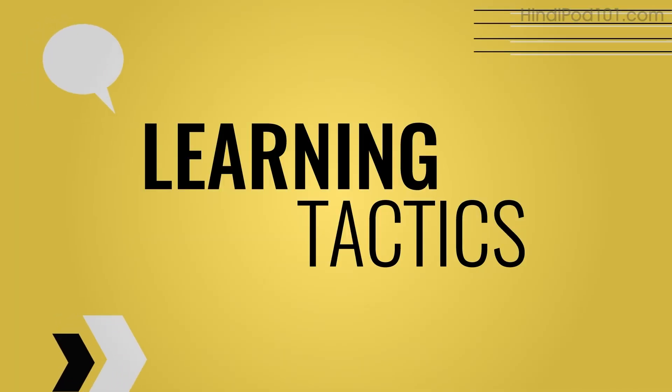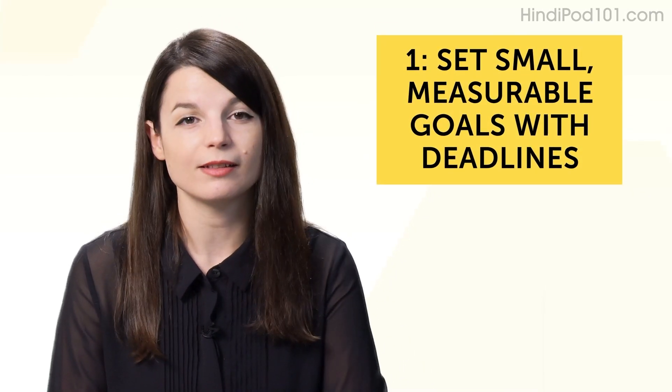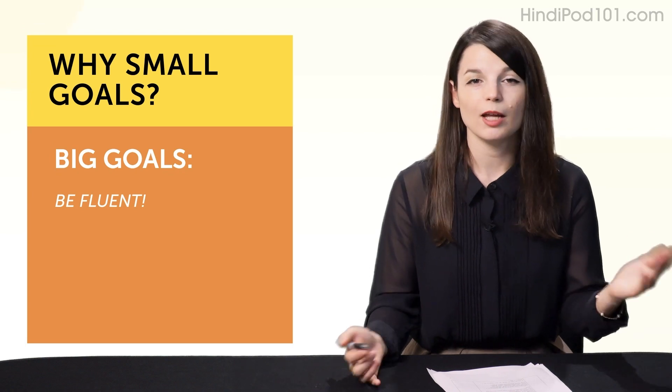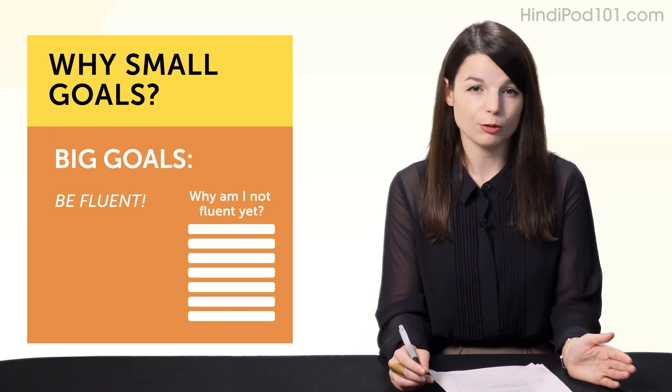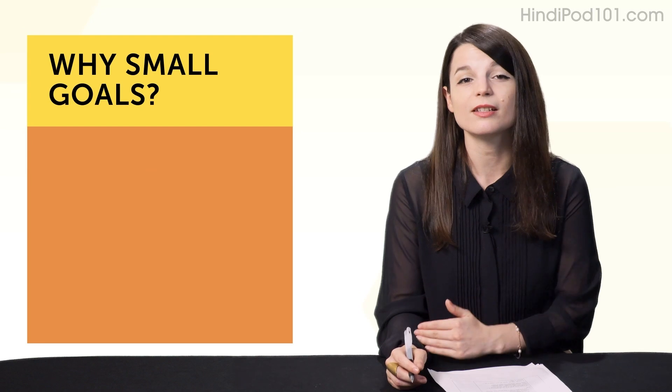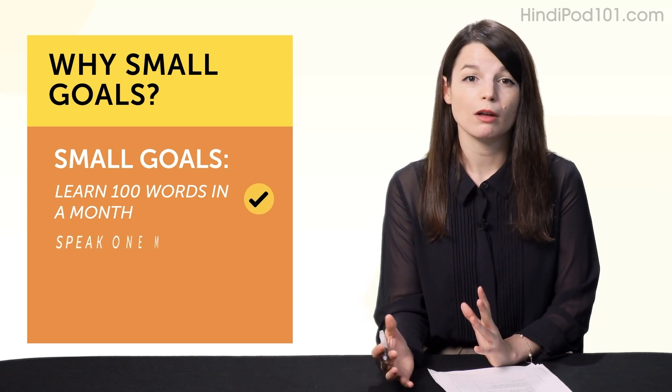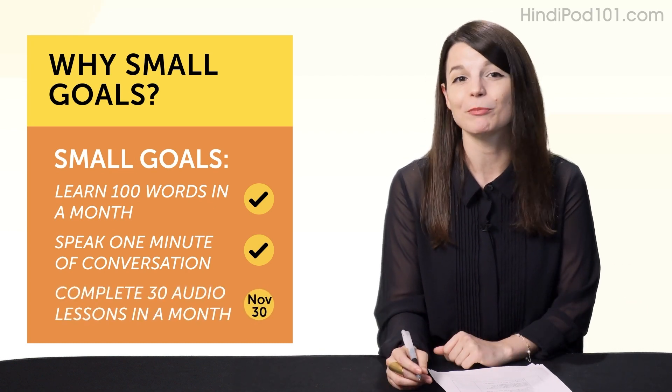Let's start with the first and most important one. Habit number one, set small, measurable goals with deadlines. Why small goals? Well, say, for example, you set big, vague goals, like 'I want to be fluent someday'. And maybe you buy a textbook. You read the first chapter. Then you start wondering if you're getting any better. You start worrying you'll never be fluent and you give up. If you do this, you need to start setting small, measurable goals. For example, learn 100 words in a month. Or speak one minute of conversation. Or do 30 of our audio lessons in one month. Deadline, November 30th.